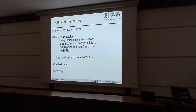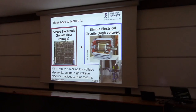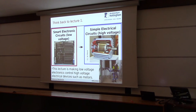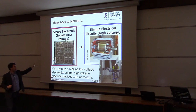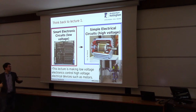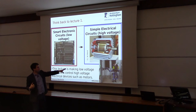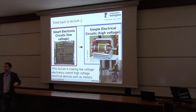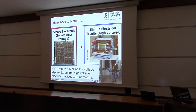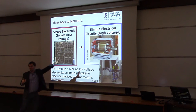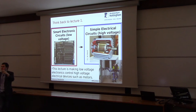Transistor basics. Think back to lecture one where I made a very clear definition between what I'm teaching - low voltage, clever electronics that makes decisions - and what Arthur's teaching: big electrical machines that do actual work, like a massive motor. There's a clear distinction between the stuff that thinks, which is low voltage and low current, and the stuff that doesn't think, which is high voltage, high current. This lecture is bridging the divide - it's all about how to get your clever intelligent circuit to control your dumb motor.